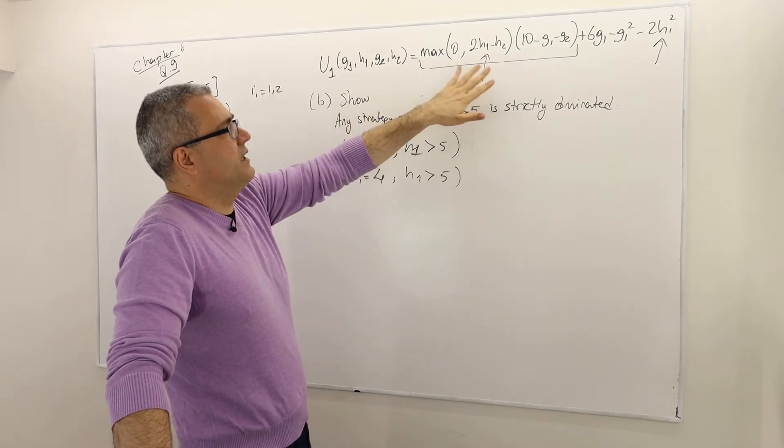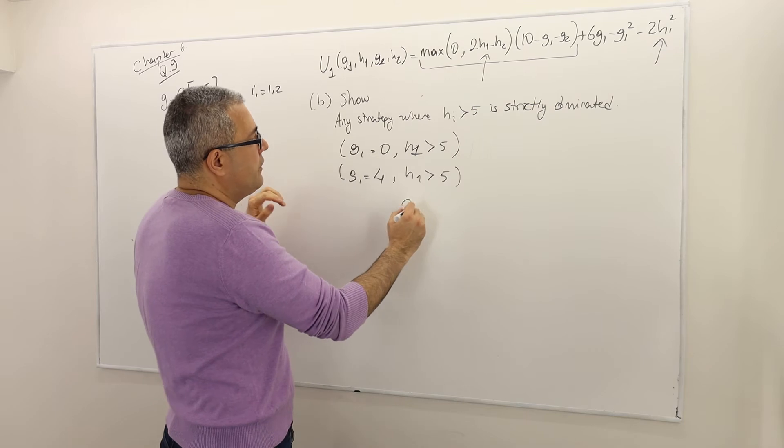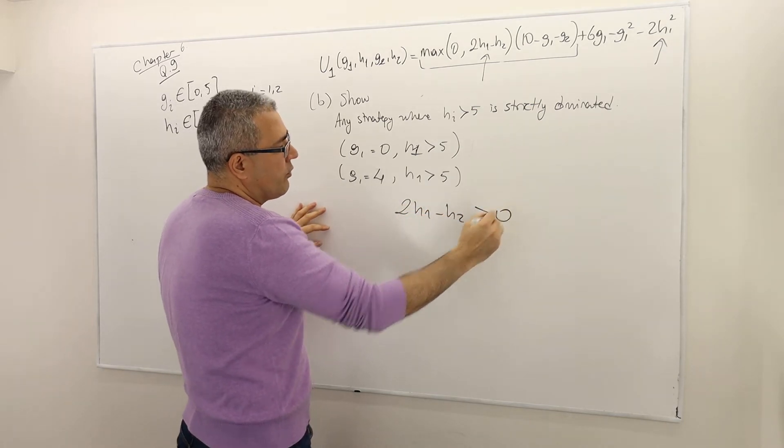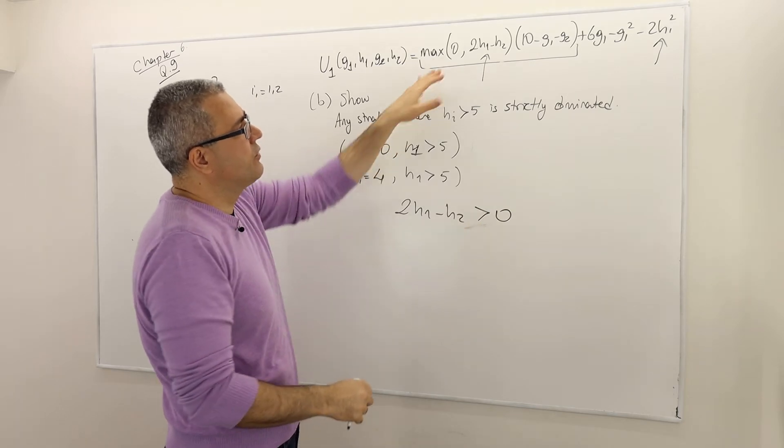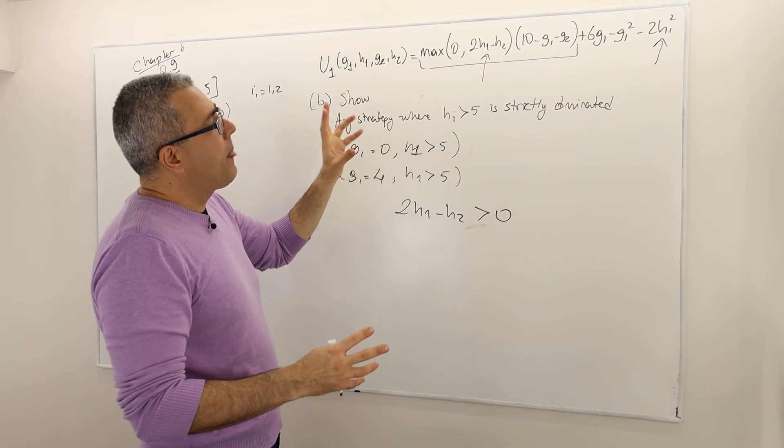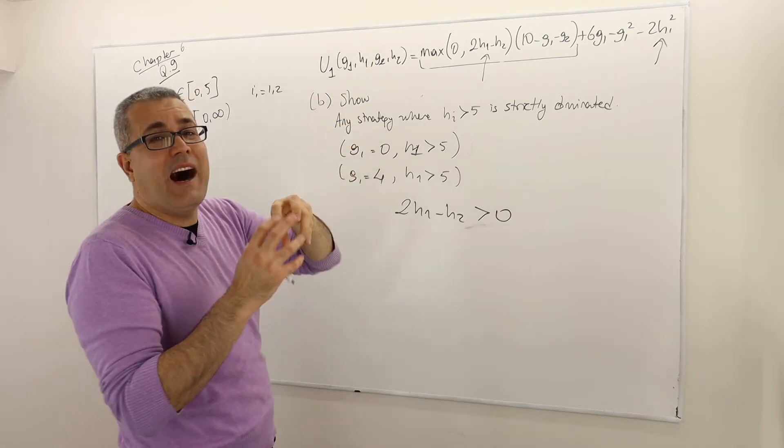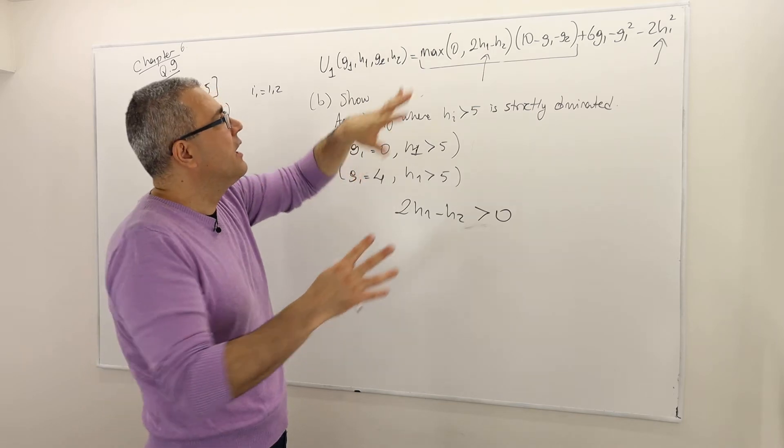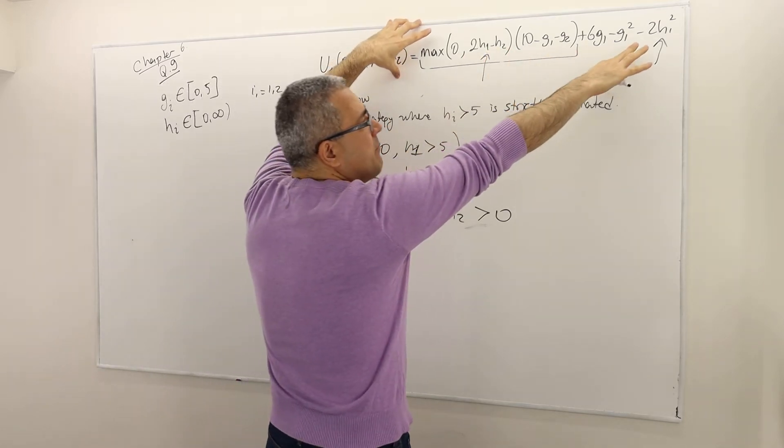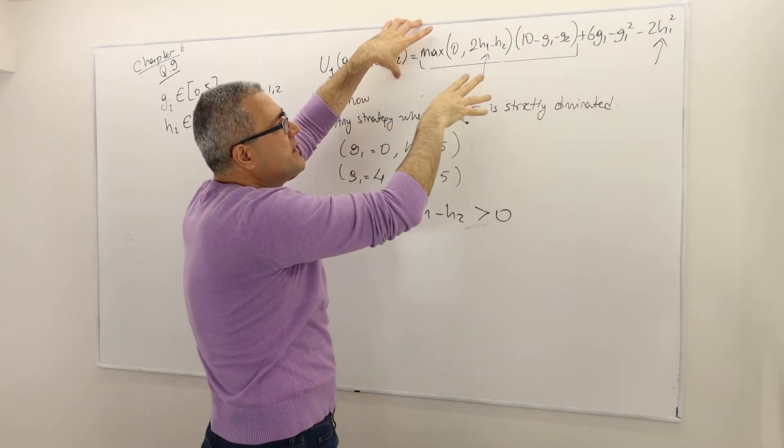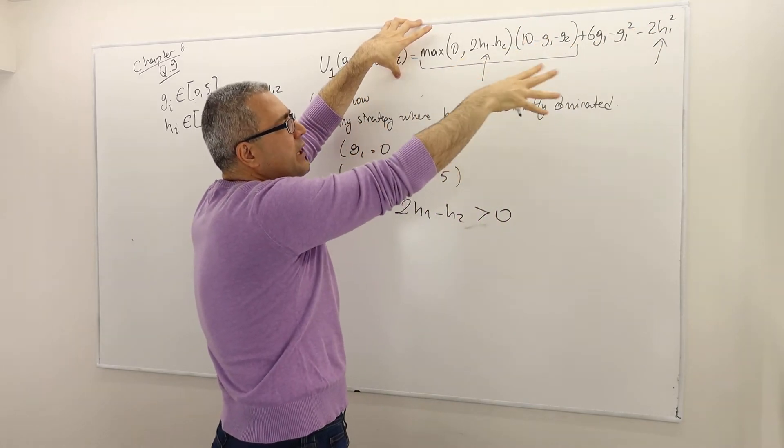But here, if this is not 0, meaning if 2H1 minus H2 is greater than or equal to, well, when it's equal to 0, this is 0 anyway. So when it's positive, however, H1, I can't say whether higher H1 decreases the payoff or increases the payoff because right here, it's going to be minus, yes, but it's going to be squared. But here, it's multiplied by a 2H1 term.